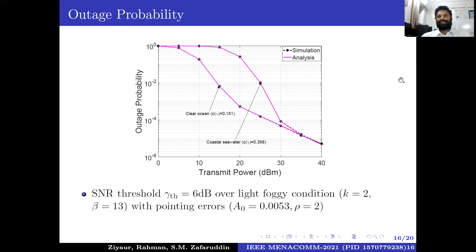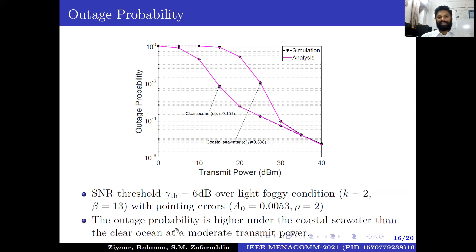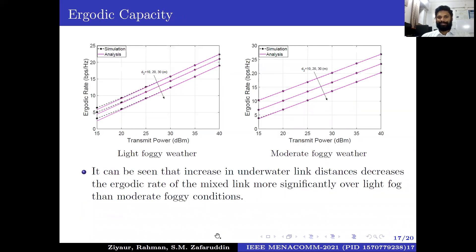We compare our results validated by Monte Carlo simulation, which shows an exact match. We can conclude from this graph that the outage probability is higher under coastal seawater than under clear ocean, at moderate transmit power.